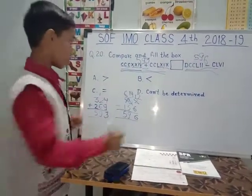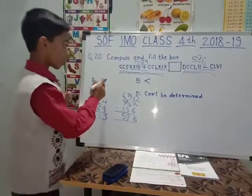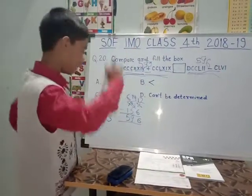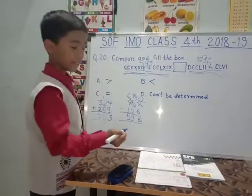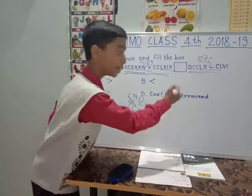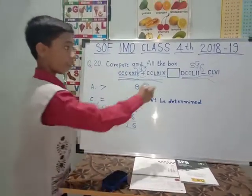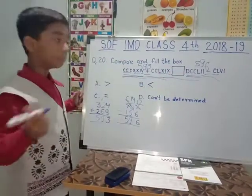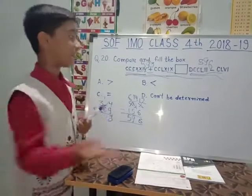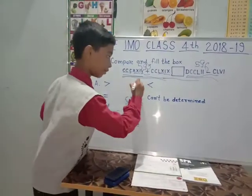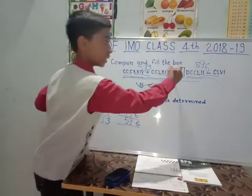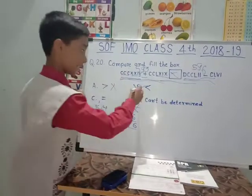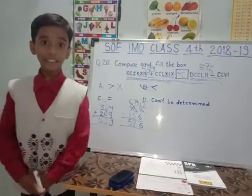Now they have asked which comparison sign to use. The crocodile faces left means greater than, faces right means less than, equal sign, or cannot be determined. 596 is greater than 593 because it is 3 more. So our answer is option B, because 596 is greater. Thank you.